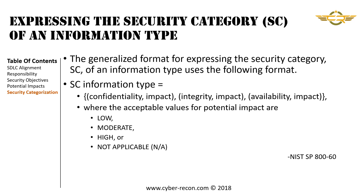NIST defines many information types in its Special Publication 800-60. It also defines this general format for expressing the security categorization of an information type, which will be used throughout the remainder of this slide deck. The formula is: security categorization of the information type equals the confidentiality impact, the integrity impact, and the availability impact. These impact values can be low, moderate, high, or not applicable.